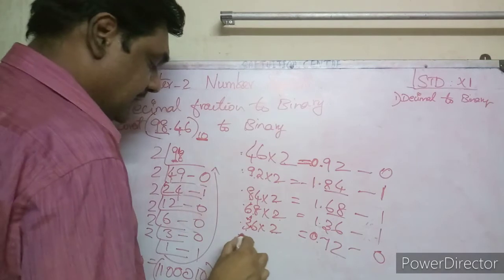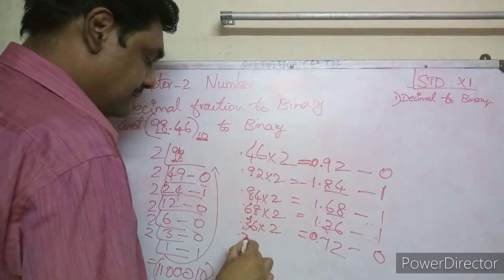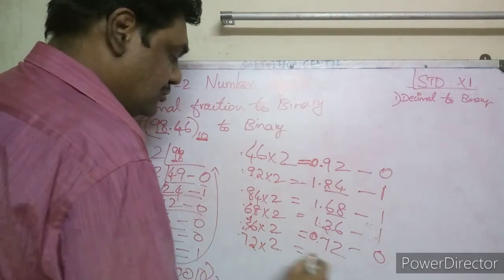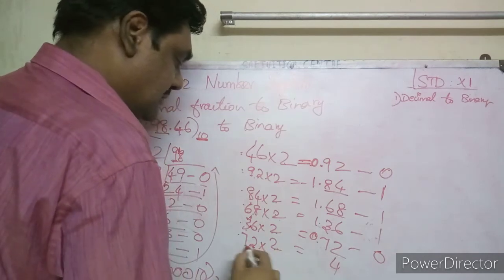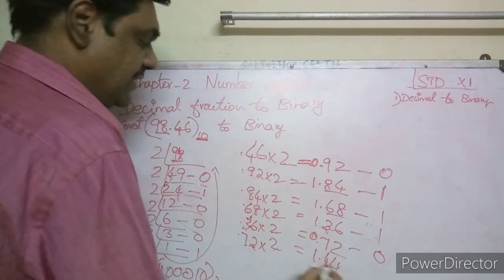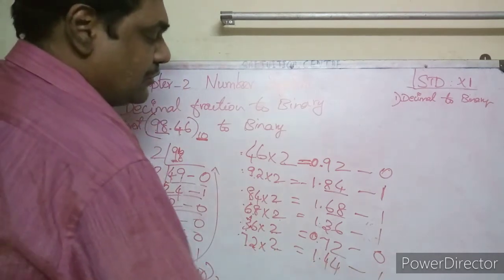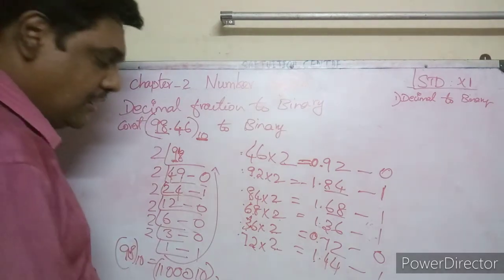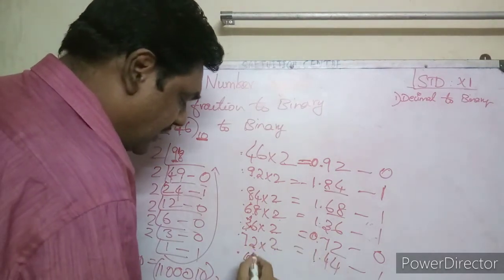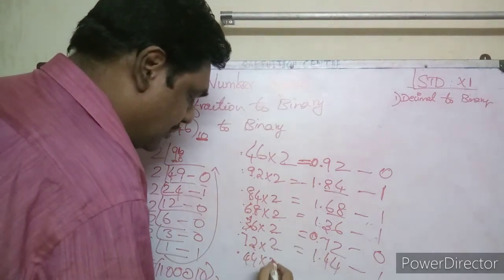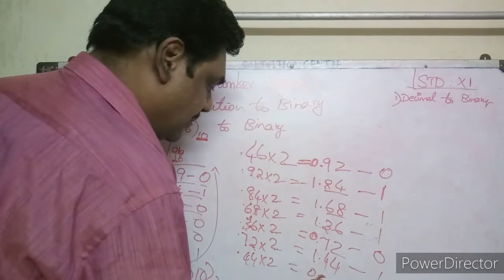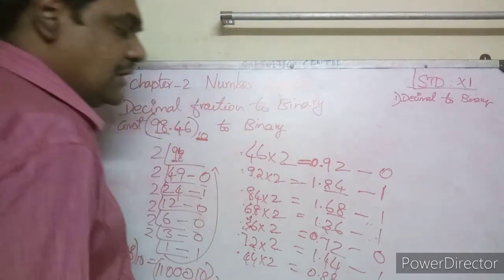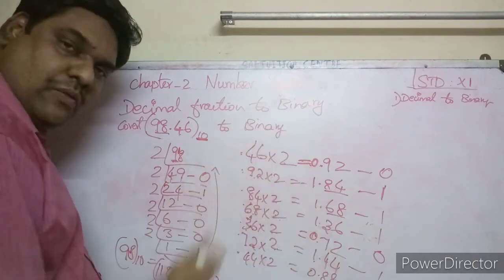Then 0.36 × 2 = 0.72, record 0, carry 0.72. Then 0.72 × 2 = 1.44, record 1, carry 0.44. Then 0.44 × 2 = 0.88, record 0. So far the fractional bits are 0, 1, 1, 1, 0, 1, 0.